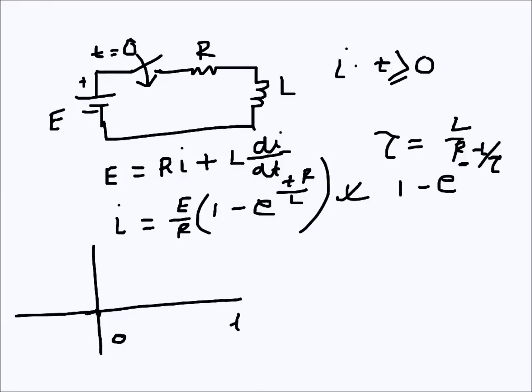If this is t equals zero here, before the switch was closed current was zero. Since inductance doesn't allow the current to change instantaneously, current will be zero right after the switch closes at t=0. Then it will slowly change like that, rising gradually.